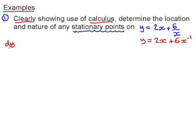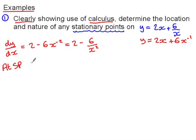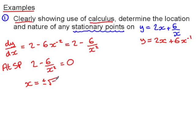Find dy/dx: 2 take 6 over x squared. At the stationary points the gradient is zero, so 2 take 6 over x squared equals zero.